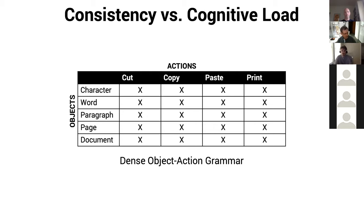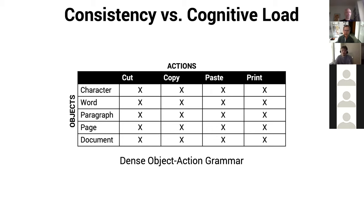It doesn't exist in the real world — there will always be some exceptions. But if you are building your UI around the densest possible grammar, you are going to introduce the lowest cognitive load. With the exception of Lars and many of you who attended the global UPA session, somebody tell me what you think the math is. How much worse is sparse than dense? Is it twice as bad? Is it a million times as bad? Somebody give me an idea.